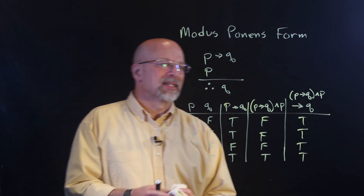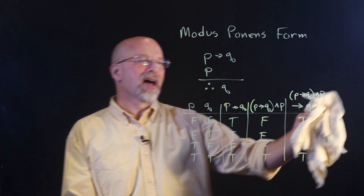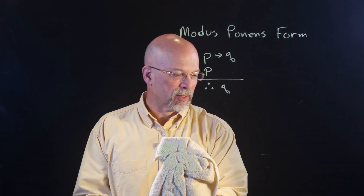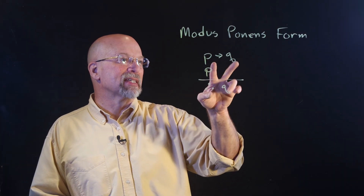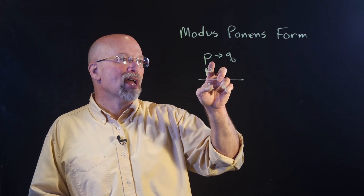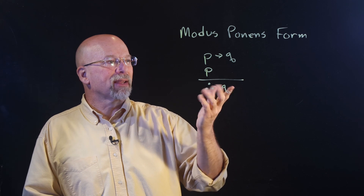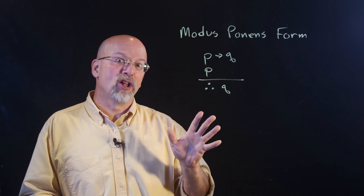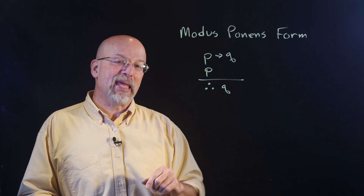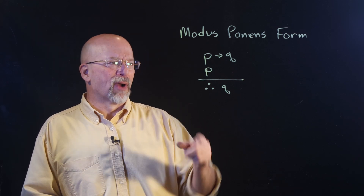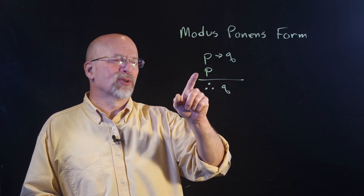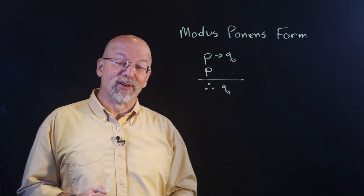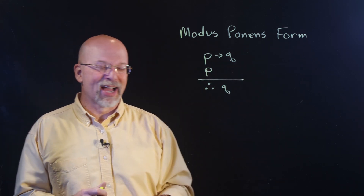The problem is that we could have some fallacies with modus ponens. For example, one fallacy is a false premise. What if I had the premise — as silly as it sounds — 'all numbers are even'? And then P is 'nine is a number.' So: all numbers are even, nine is a number, therefore nine is even. That's not quite right.